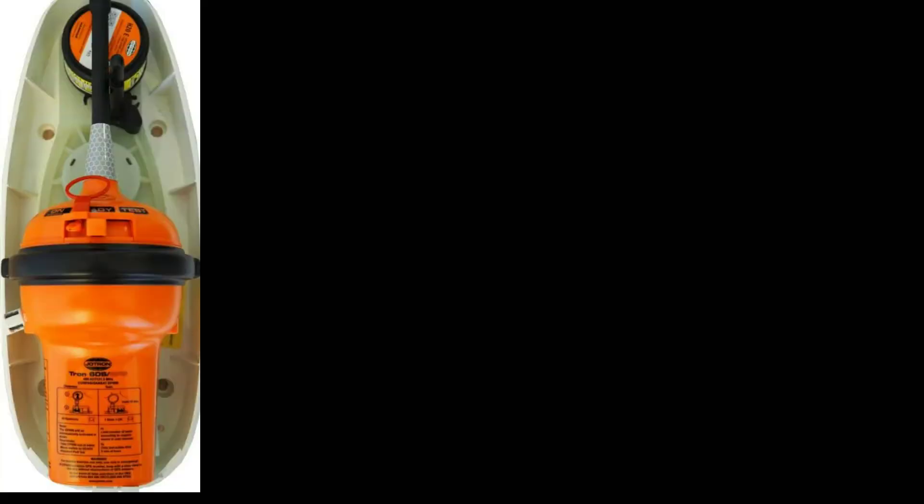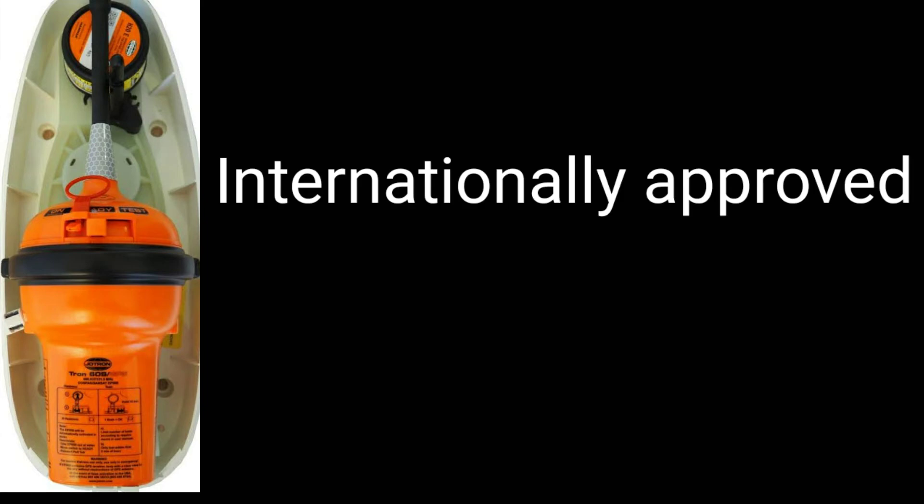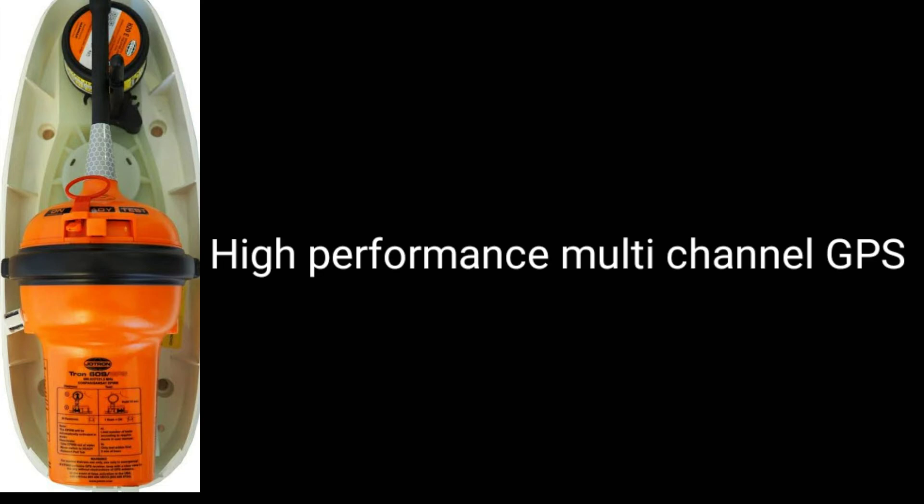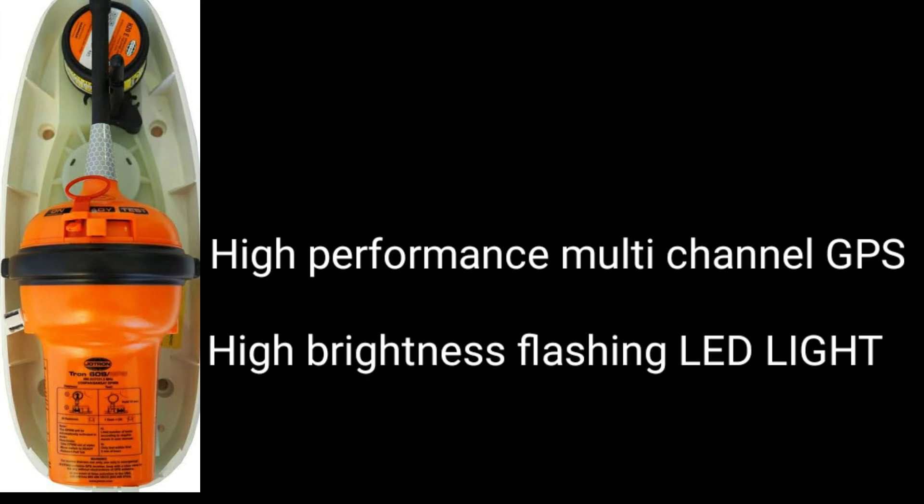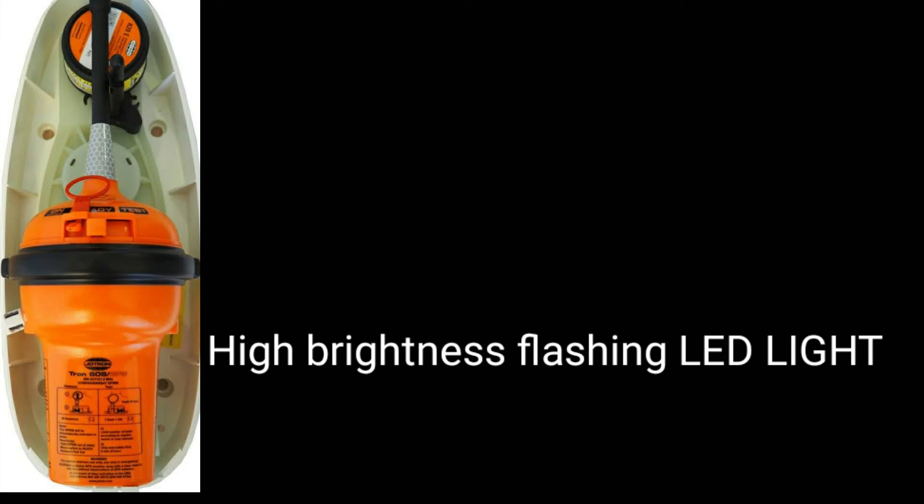406 MHz GPS EPIRBs have the following features: internationally approved, high performance multi-channel GPS, high brightness flashing LED light, minimum 48 hour continuous operation, comprehensive self-test facility with battery use indicator, and manual release bracket.